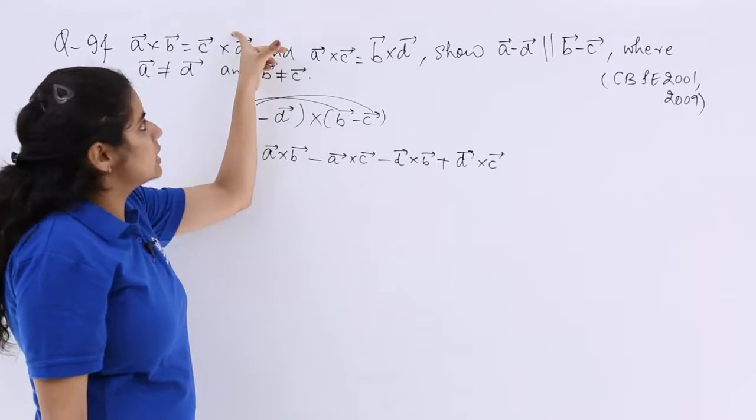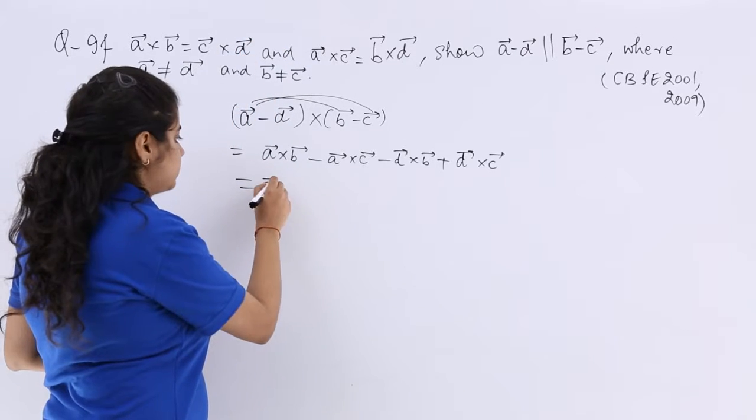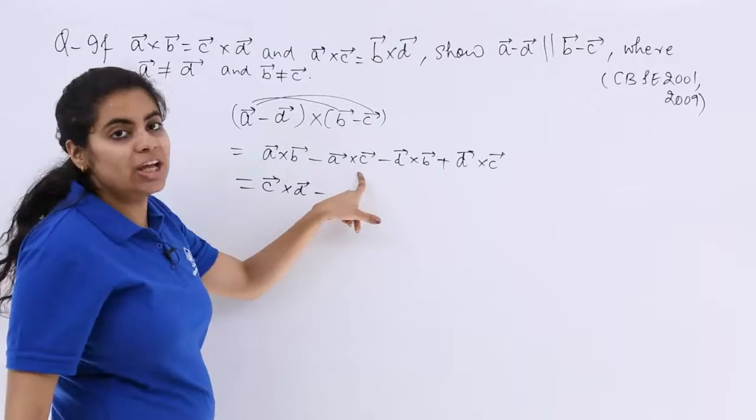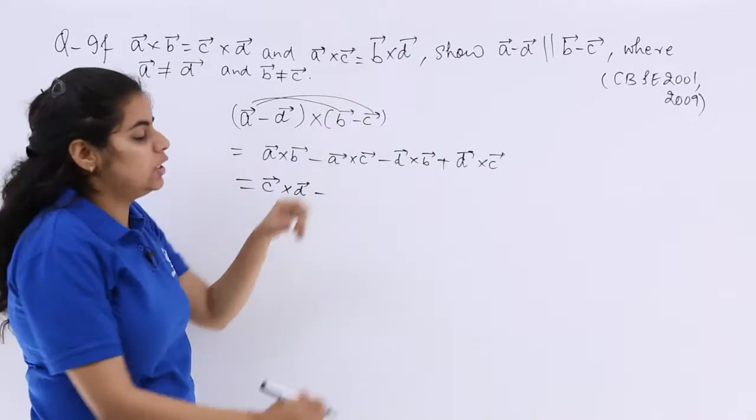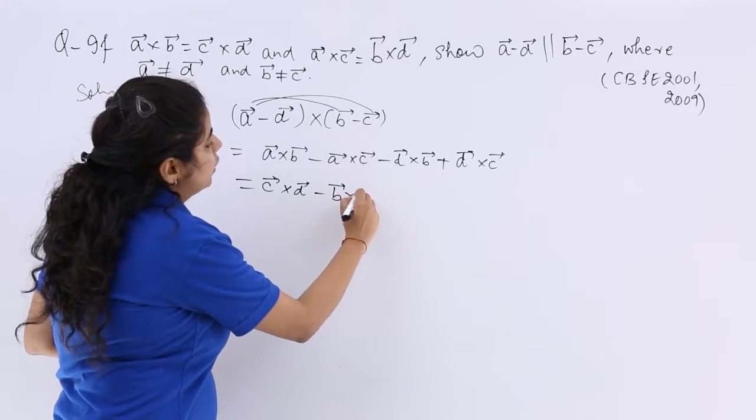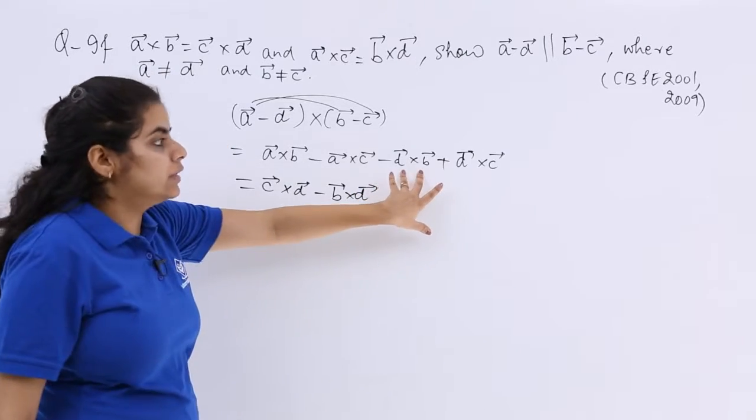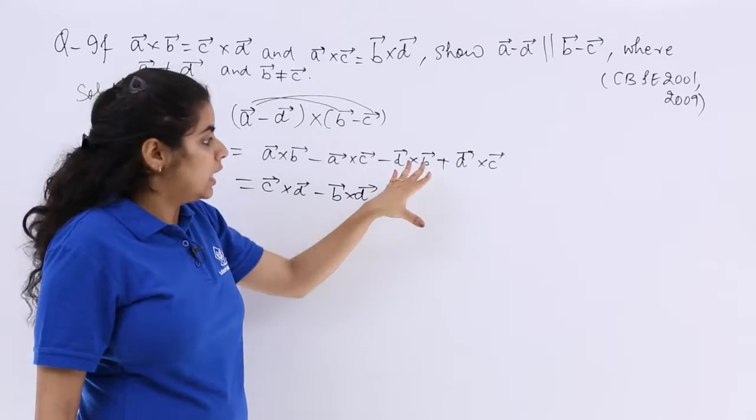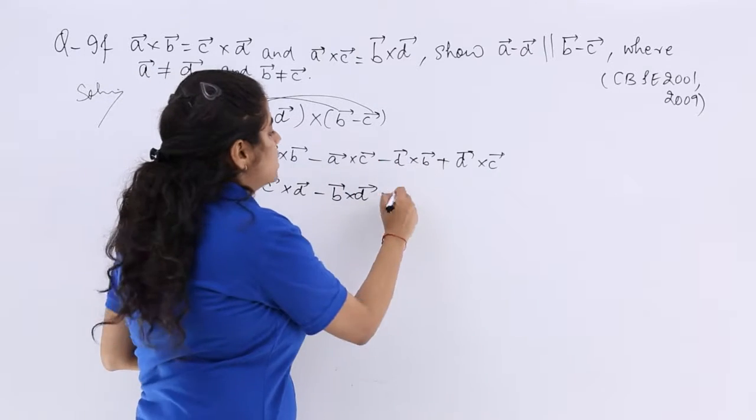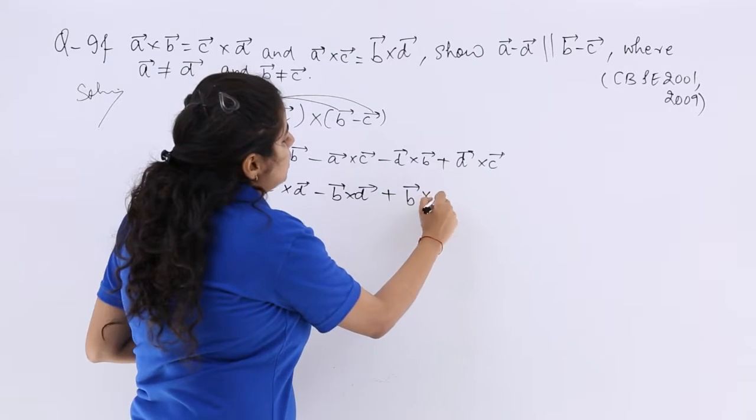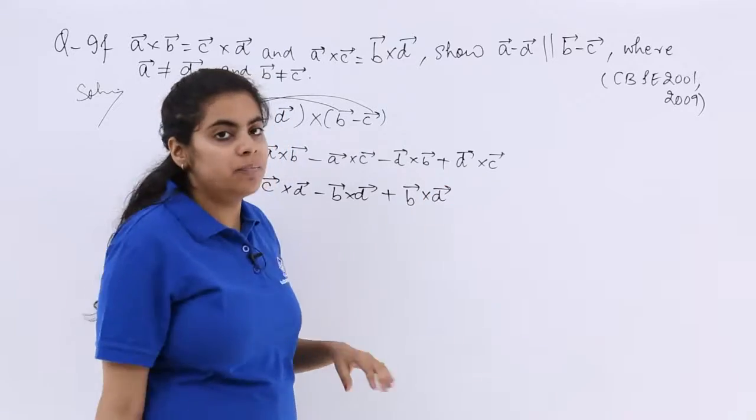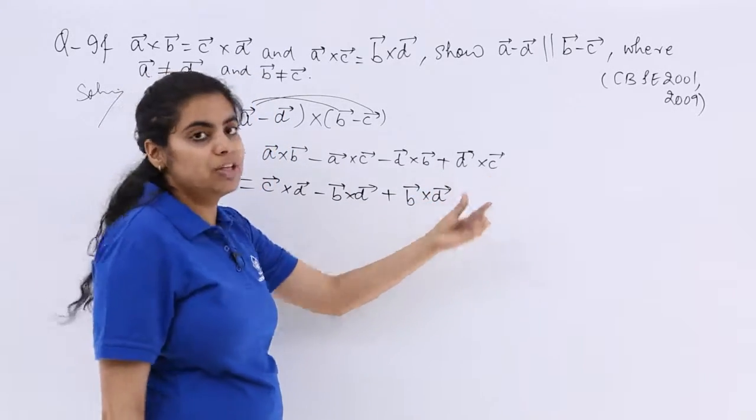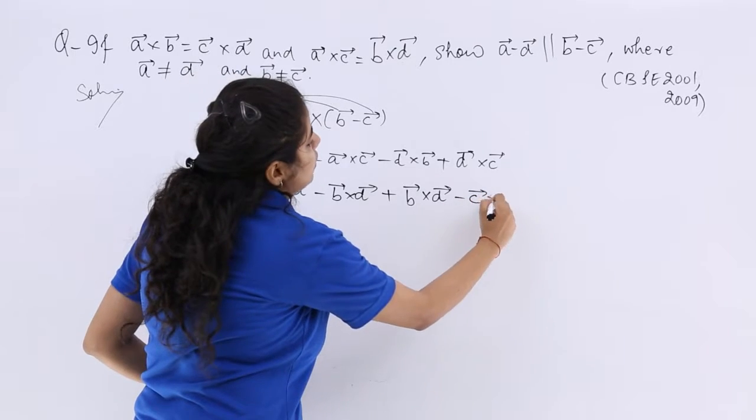Now A⃗×B⃗ is given as C⃗×D⃗, so C⃗×D⃗ minus A⃗×C⃗ is given to you as B⃗×D⃗ minus B⃗×D⃗. Now this is actually the opposite order of B⃗×D⃗. If I change the order, this minus becomes plus and that is a property also. So it is B⃗×D⃗. Then similarly, this is the opposite order of C⃗×D⃗. So if I change the sign, this becomes minus C⃗×D⃗.